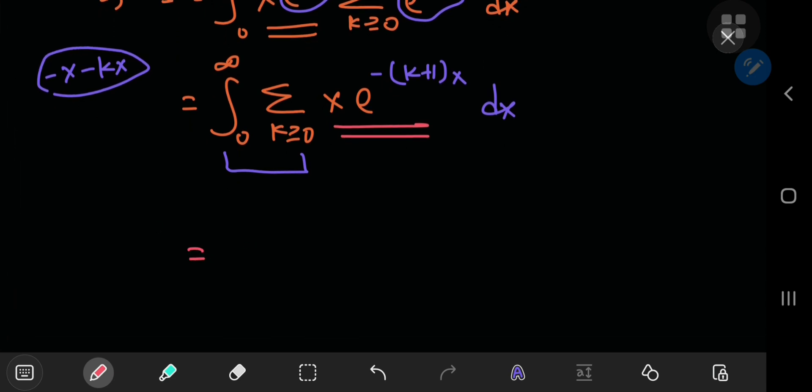So you can switch up the sigma and the integration, the sum and the integration operators. So you have the infinite sum over k of the integrals from 0 to infinity of x times e to the negative k plus 1 times x, integration with respect to x of course.